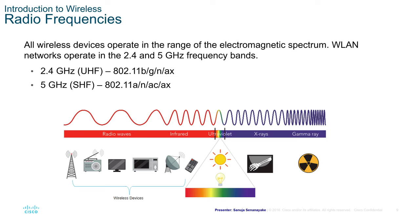At the bottom of the screen there is a diagram showing radio waves, infrared, ultraviolet, X-ray, and gamma ray. Wireless devices operate within the frequencies of radio waves all the way to around the end of the infrared spectrum.